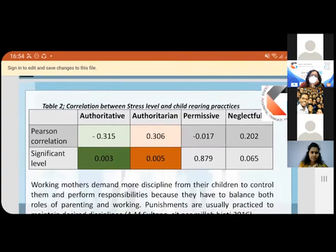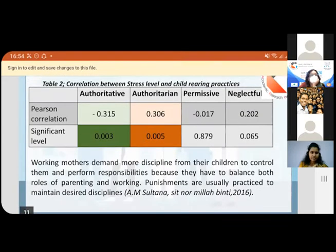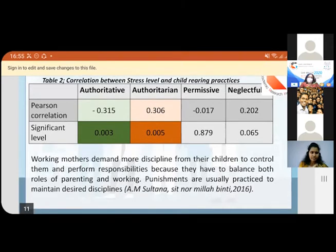I would like to move to the correlation between stress level and child-rearing practices. I used 0.01 as a significant level. Here you can see significant correlations with stress. There is a negative correlation between authoritative parenting and stress, and authoritarian parents show a positive correlation with stress. As literature says, normally working mothers usually practice punishment and discipline because they have less time, but they have to perform their responsibilities toward children. So it is easier to use authoritarian-type parenting rather than other time-consuming child-rearing attributes.